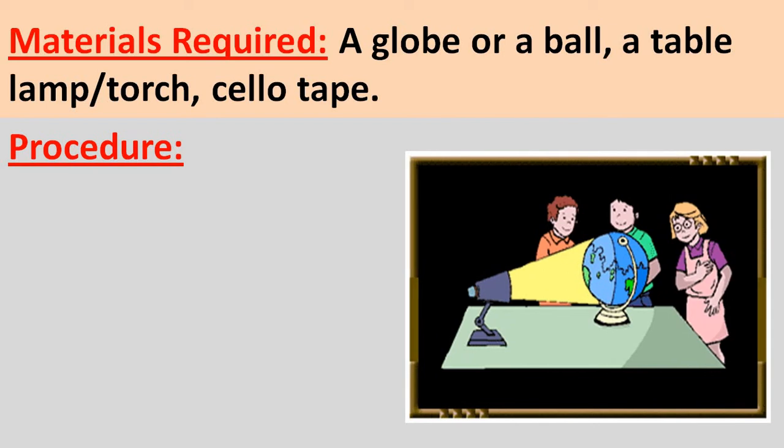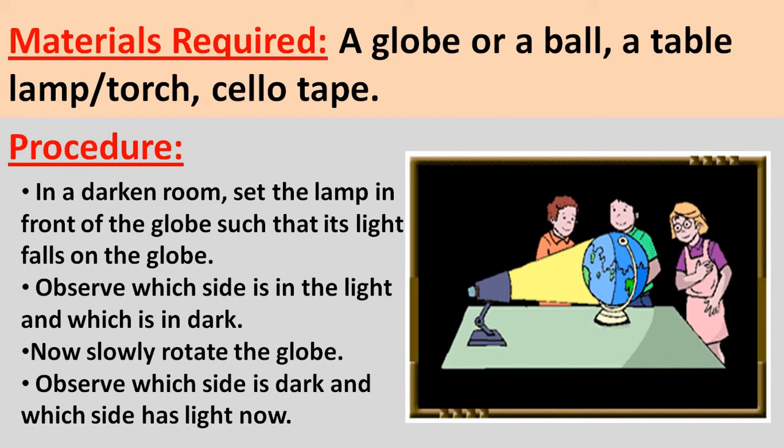Now, keep a globe on the table and set the lamp in front of the globe such that it gets light from the lamp. Children, you have to do this activity in a dark room. Now, observe which side is in the light — which side of the globe has day. The dark side represents night.